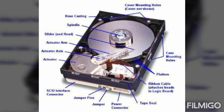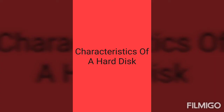Now we will discuss the characteristics of a hard disk. A hard disk is a read and write storage media, meaning you can read from and write on a hard disk any number of times. We can view content, add, edit and change content on it as many times as we want. That is why it is known as read and write media.